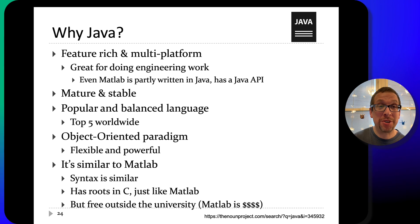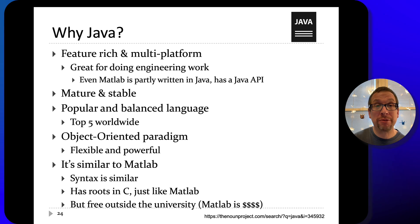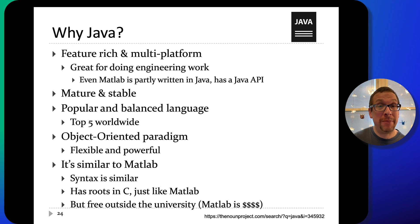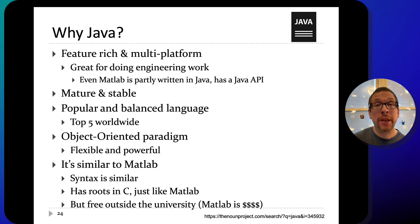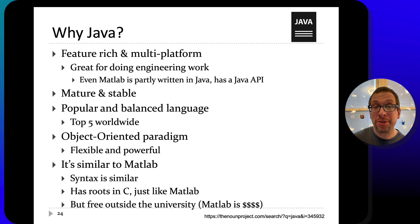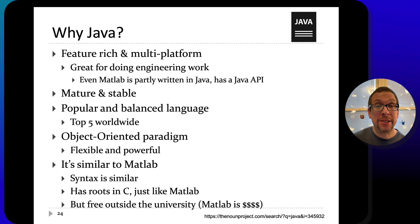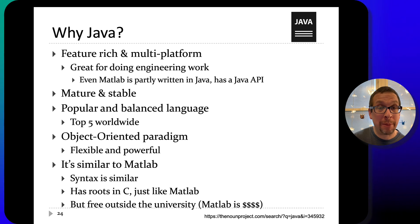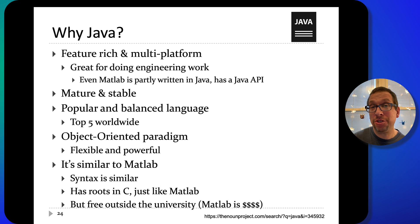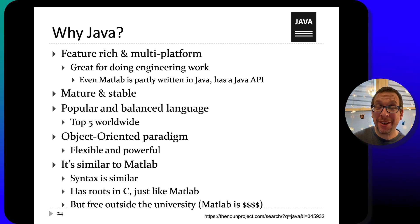Why are we using Java in this course? Java is a mature, stable, and feature-rich language. It's multi-platform — programs like MATLAB are partly written in Java for these reasons, and it even has a Java API you can access. Java is popular and balanced — one of the top five programming languages in the world. It uses an object-oriented programming paradigm, which makes it flexible and powerful. It's similar to MATLAB in that both are rooted in C, so transitioning to Java is relatively straightforward from that background. And unlike MATLAB, when you leave university, it's free to use in regular work and hobby projects.